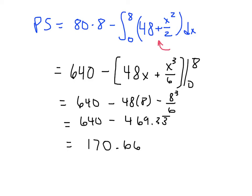Remember that we're working in units of a thousand, so we have to multiply by a thousand. So our producer surplus is $170,666.67—we'll round up to the nearest cent there. This is going to be the producer surplus.